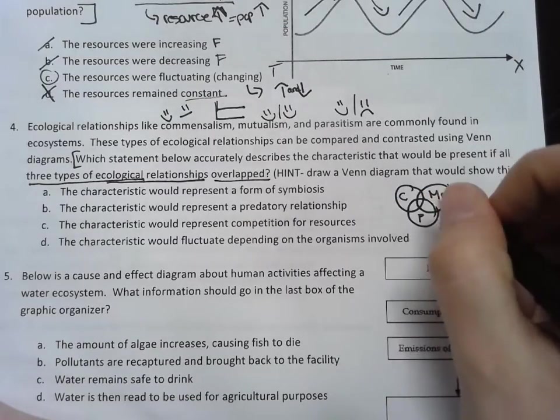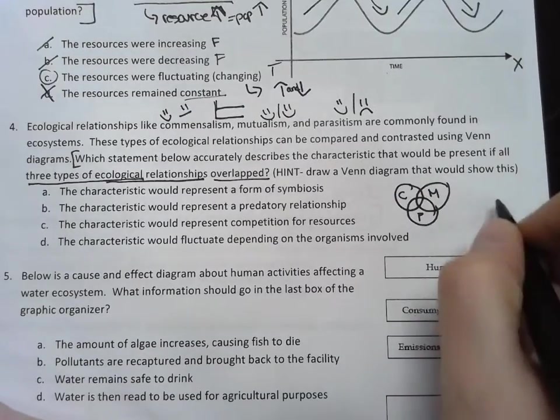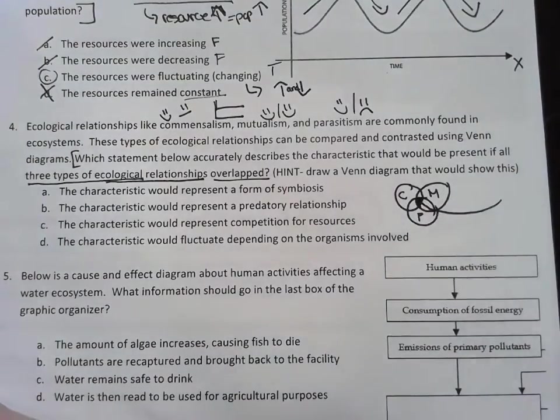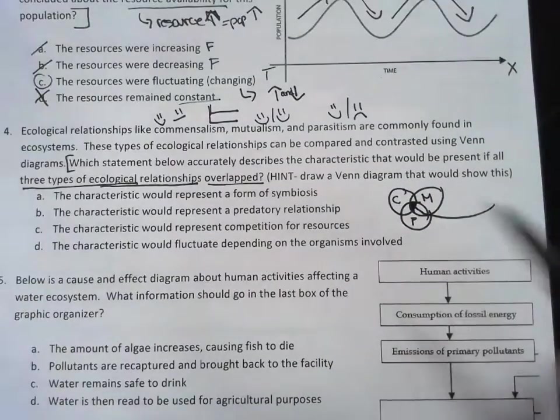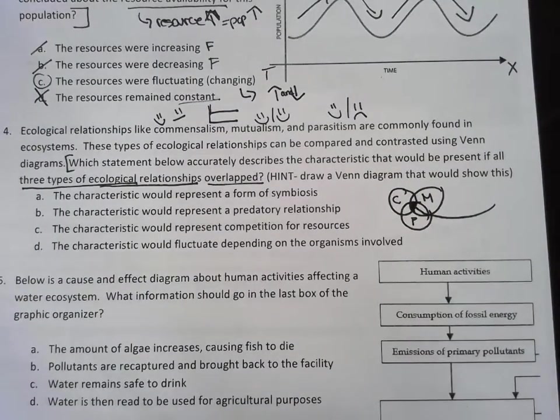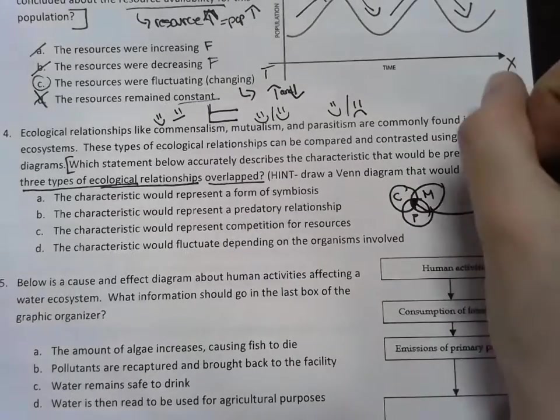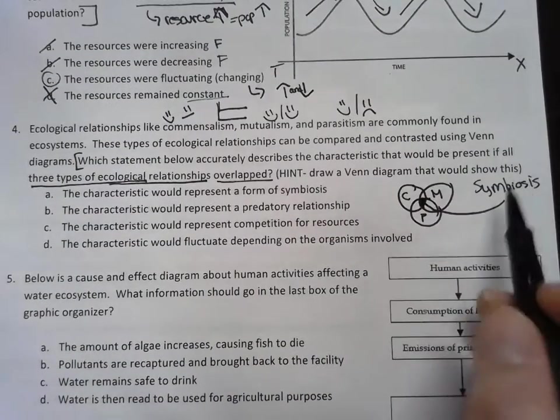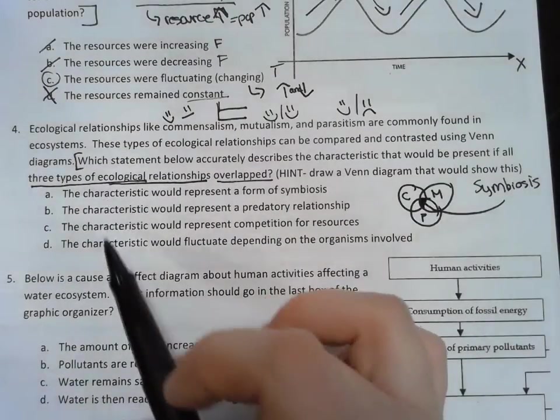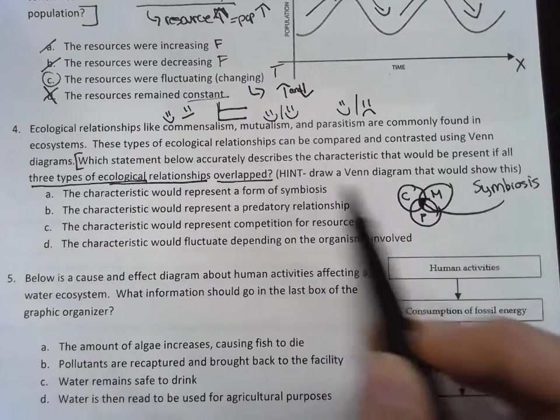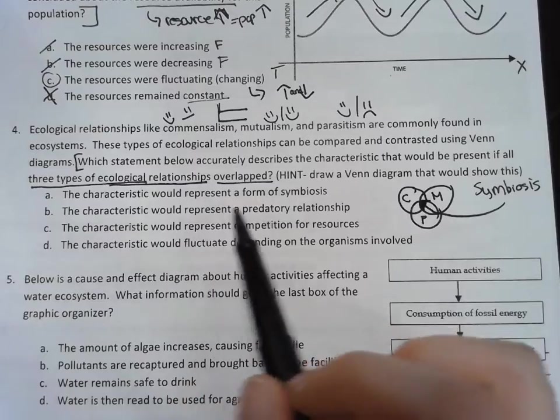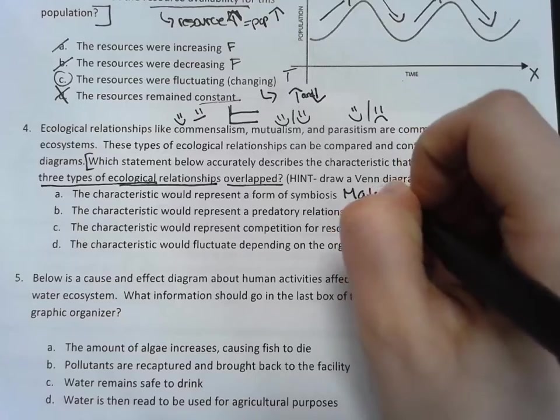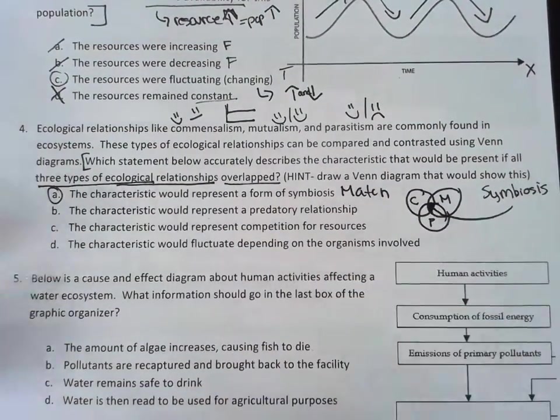And my hint was to draw a Venn diagram. So what this would look like is that I have three relationships: commensalism, mutualism, parasitism. And they're asking me what characteristic would go right in the middle here. So if all these relationships are overlapping, that means they're all working together. When things work together, that's called symbiosis. So when relationships work together, that's called symbiosis.